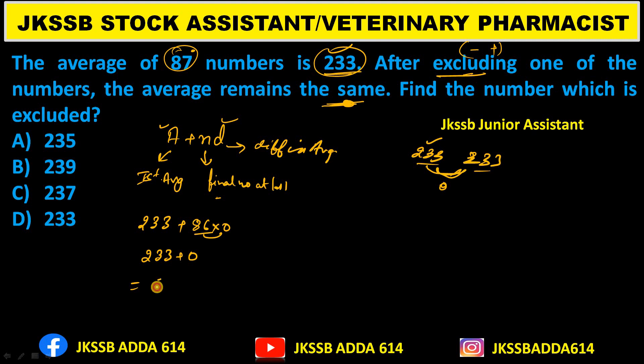So 233 plus 86 multiplied by 0 gives 233 plus 0, which equals 233. That is the answer — option number D is the right answer. This question was from JKSSB Junior Assistant.